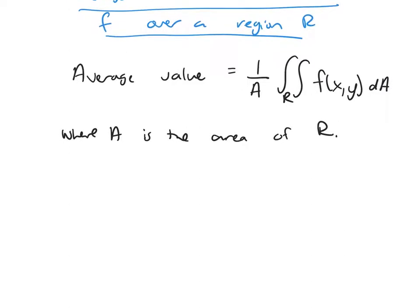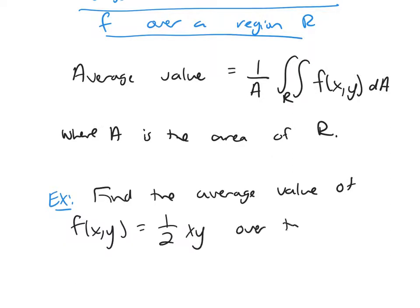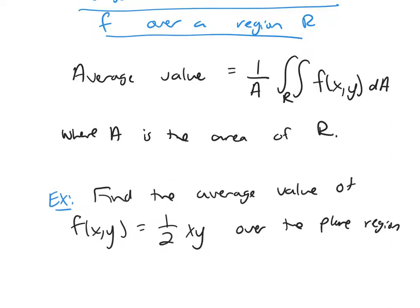So let's look at an example. Find the average value of the function f(x,y) = (1/2)xy over the plane region r with vertices (0,0), (4,0), (4,3), and (0,3).